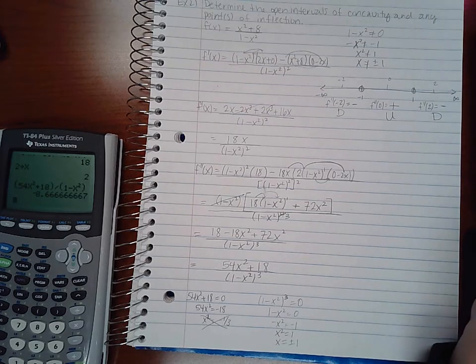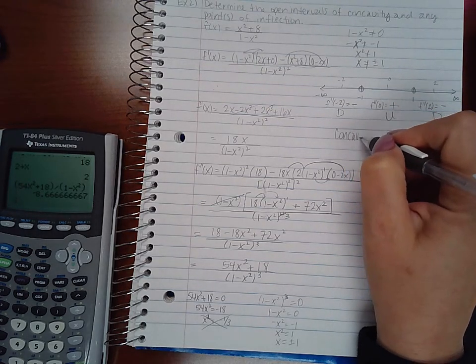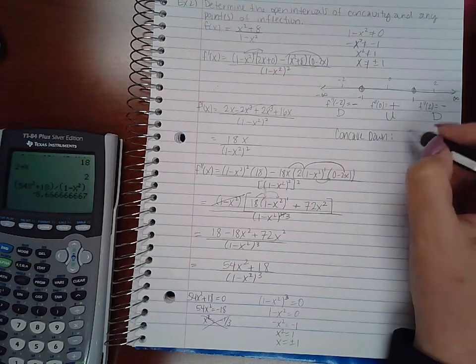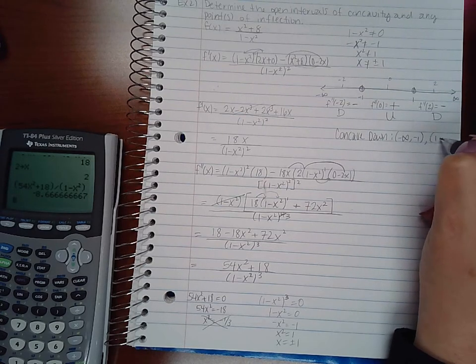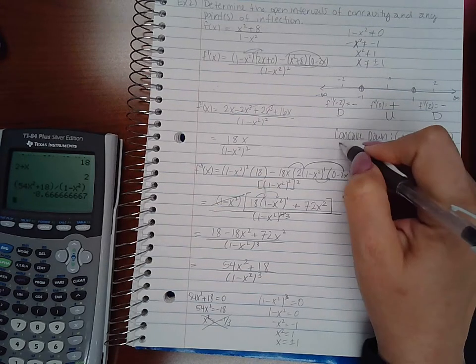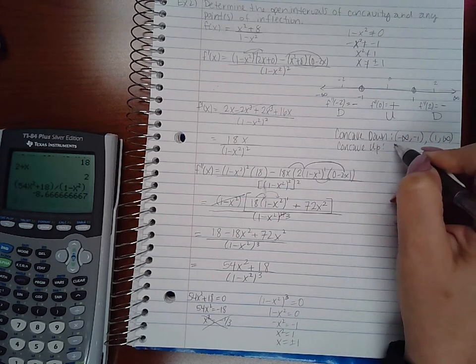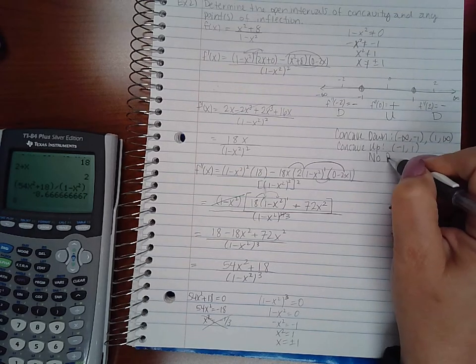So I get concave downward for this interval, concave upward for this interval, and concave downward for this interval. So for my concavity, I have two intervals for concave down: from negative infinity to negative 1, and from positive 1 to infinity. And I have one interval for concave upward: from negative 1 to 1.